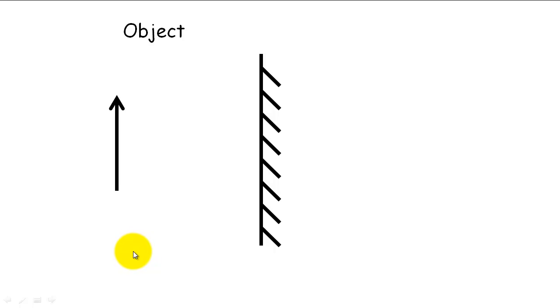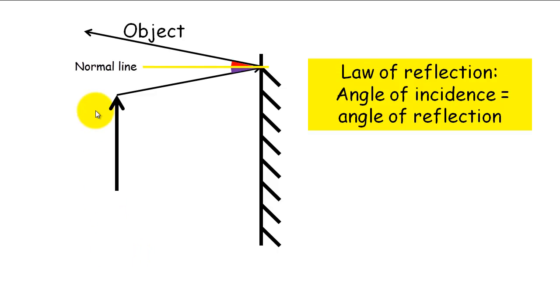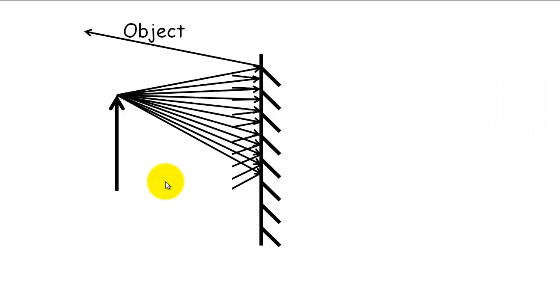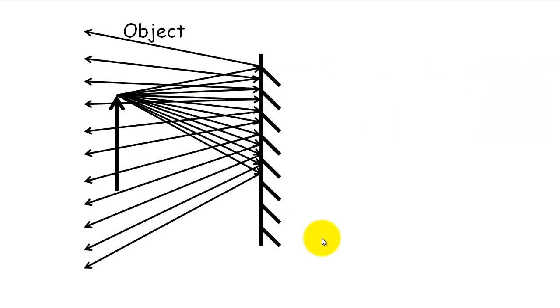Well, with reflection, any rays that strike the arrow and bounce off the arrow and then hit the mirror, when they hit the mirror, they will follow the law of reflection, which is that this purple angle must equal this red angle. Or, the angle of incidence must equal the angle of reflection. If we think of all the rays that are going to come off the arrow and hit the mirror, well, not all of them, but most of them, you'll get something like this.